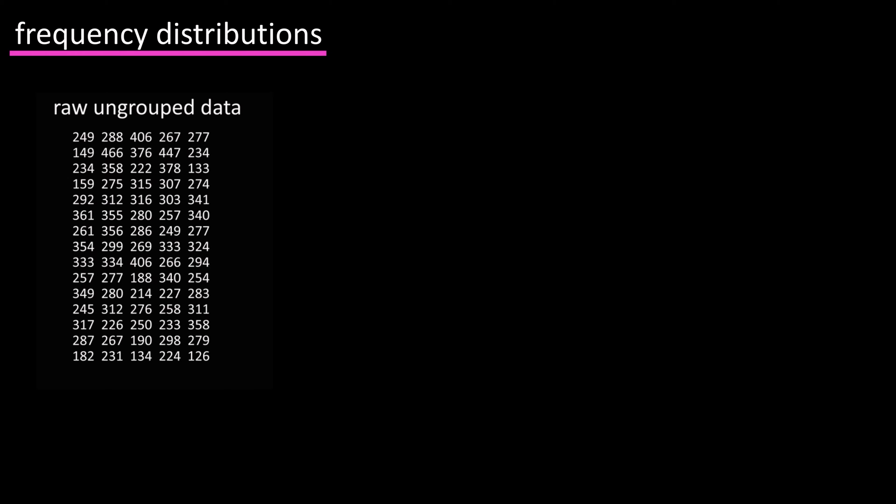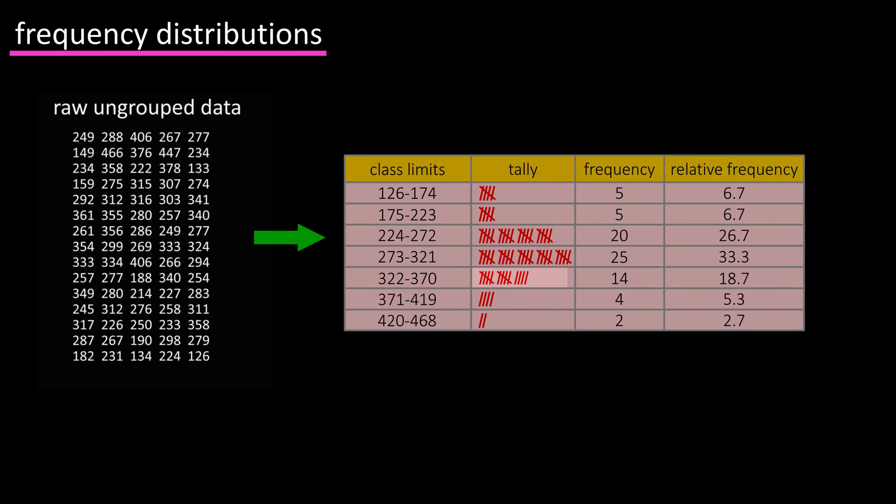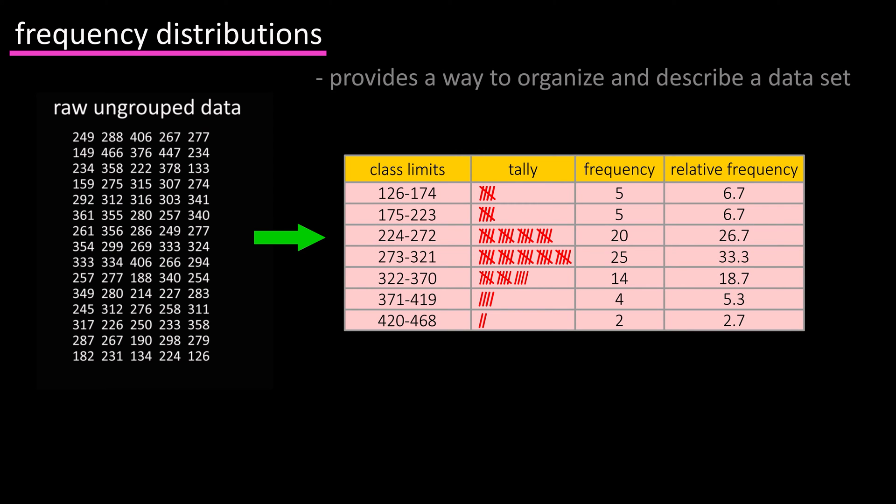A frequency distribution is a process that takes raw, ungrouped data and summarizes it in a table form. It basically gives you a way to organize and describe a data set.